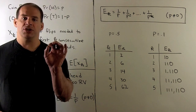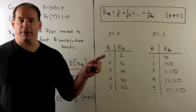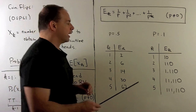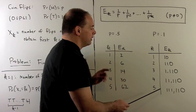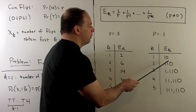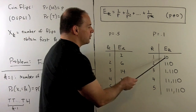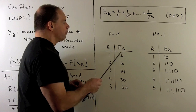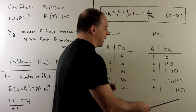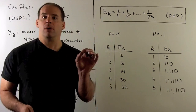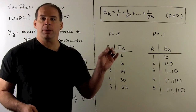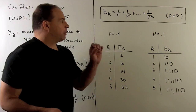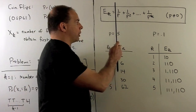When heads appear less often — for instance, if p equals 0.1 — we have the following table. In this case, as we go down our list, things are growing by an order of magnitude: here we're roughly multiplying by 2, here we're roughly multiplying by 10. In general, roughly you're going to multiply by 1/p, because the 1/p^k term is going to dominate all the rest of the terms.